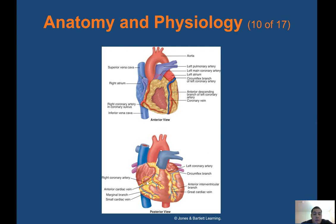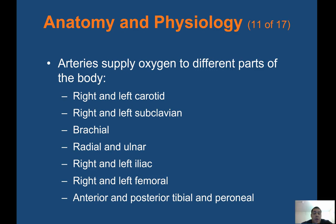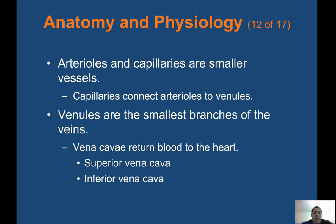The right and left coronary arteries supply the heart muscle. Arteries supply oxygen to different parts of the body: the right and left carotid, right and left subclavian near the shoulder, brachial, radial and ulnar, right and left iliac, right and left femoral, and anterior and posterior tibial and peroneal. Arterioles and capillaries are smaller vessels. Capillaries connect arterioles to venules — the smallest branches of veins. The vena cavae — superior and inferior — return blood to the heart.